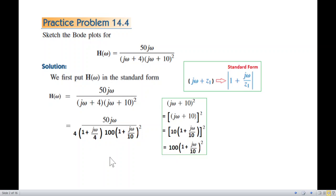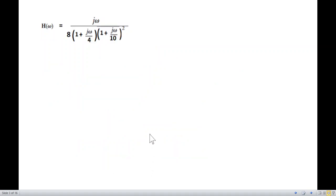50 and 102, 2 into 4 is 8. So the denominator is 8 times 1 plus j omega by 4 times 1 plus j omega by 10 squared. And then j omega. So this is the plot. This is the magnitude and angle form.